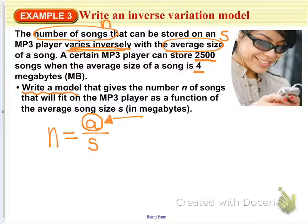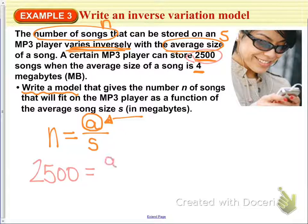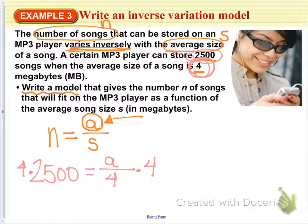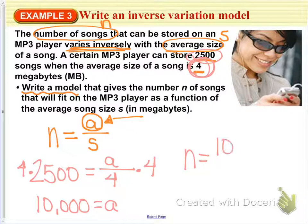Plugging in what we know: if you have 2,500 songs, the average song size is 4 megabytes. Solving for a, we get 10,000 equals a. Therefore our equation is: the number of songs equals 10,000 divided by the size of the average song.